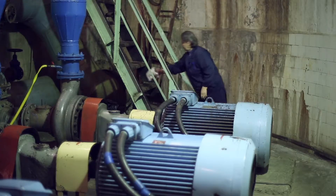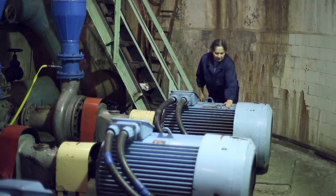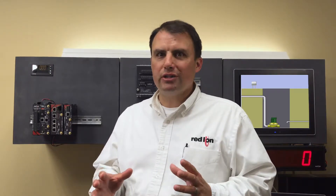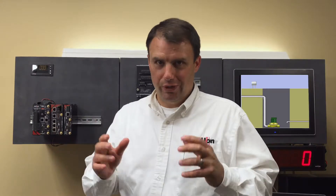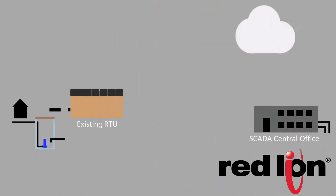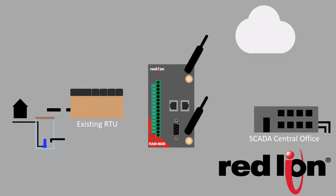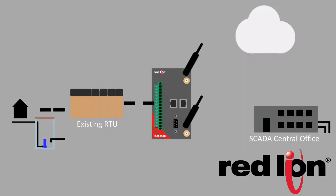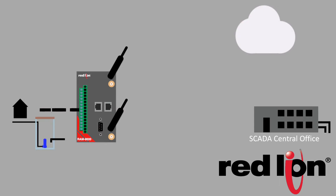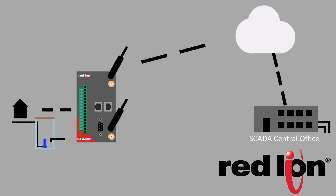Dispatching technicians to remote sites to check on equipment is inefficient and wastes time. Redline's solution to this growing issue is our Ram Cellular RTU and routers. These products harness your data and make it available in real-time. Our Ram Cellular RTUs can be connected to existing RTUs, making use of your current infrastructure and sending the data to you over the cellular network.